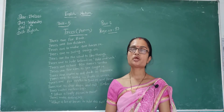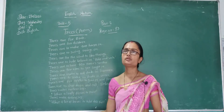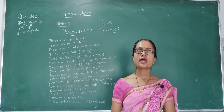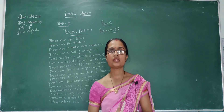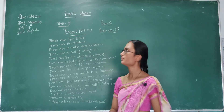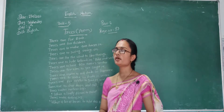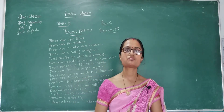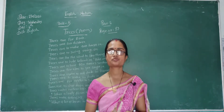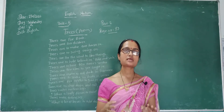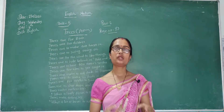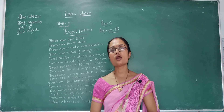Now let's come to the poem Trees. In this poem, every line talks about trees and every different use of trees. Let's start. The first line is: trees are for birds. Why are trees for birds? Because birds make nests on the tree, so the tree is the house of the bird.